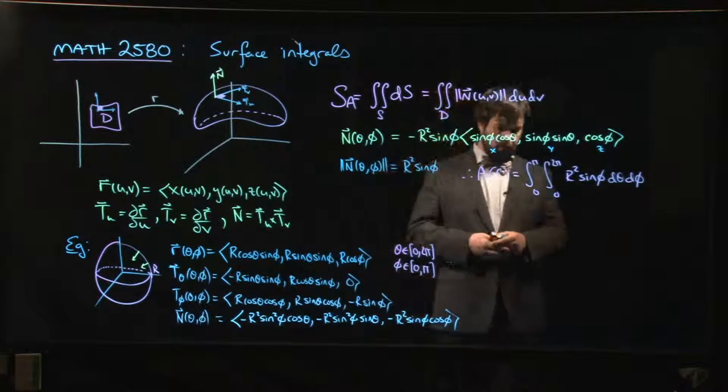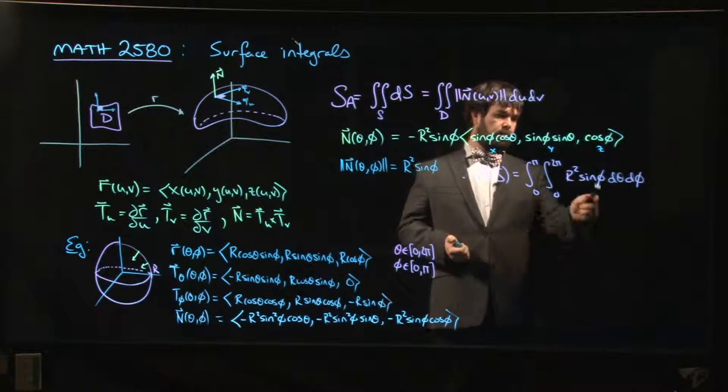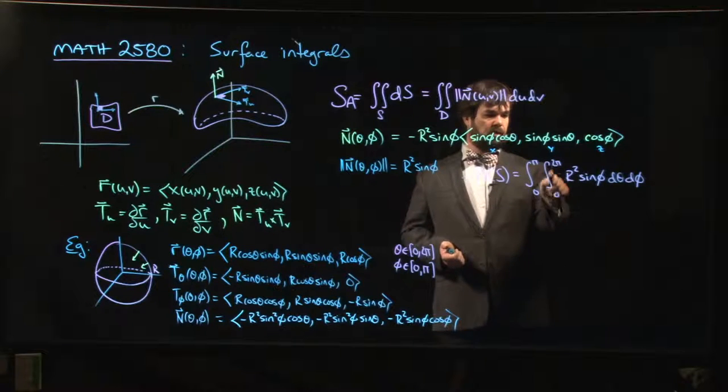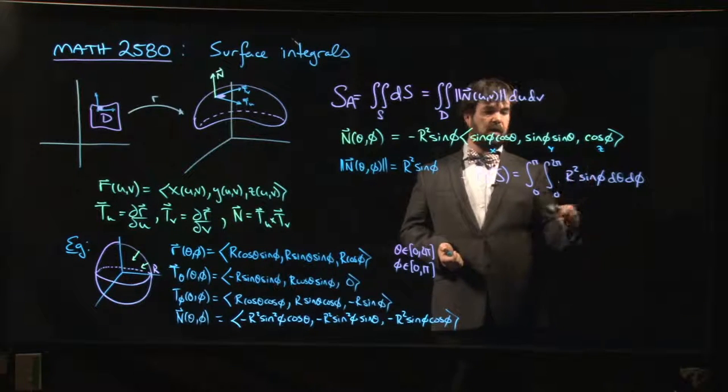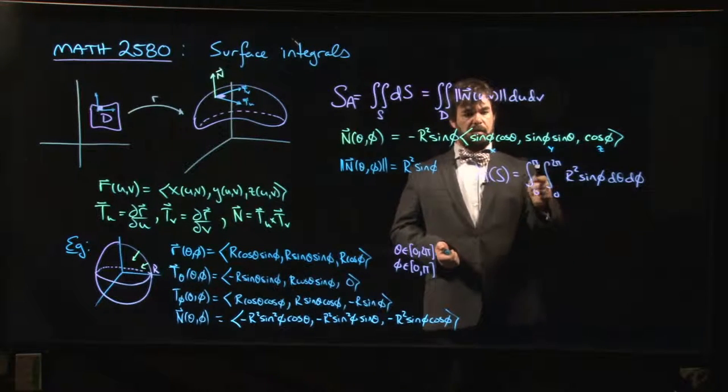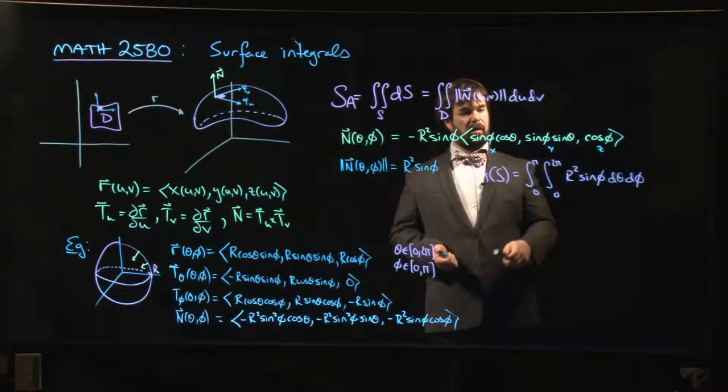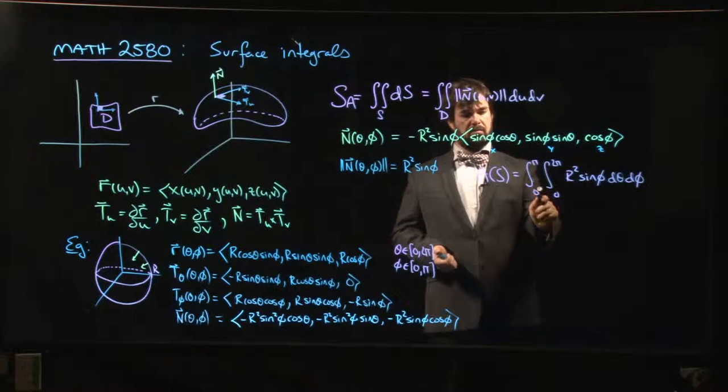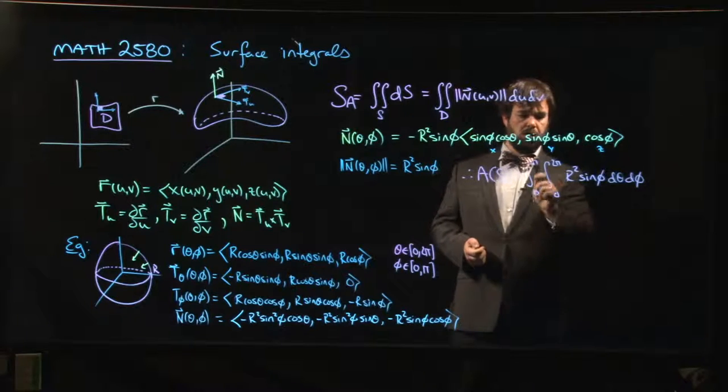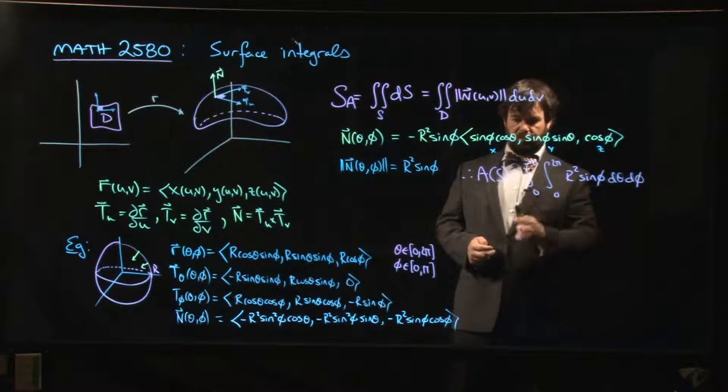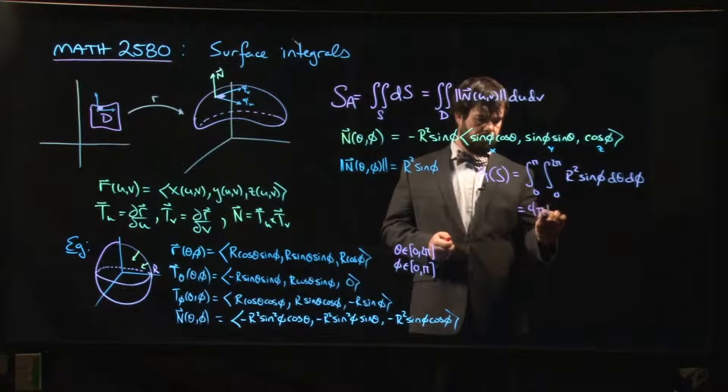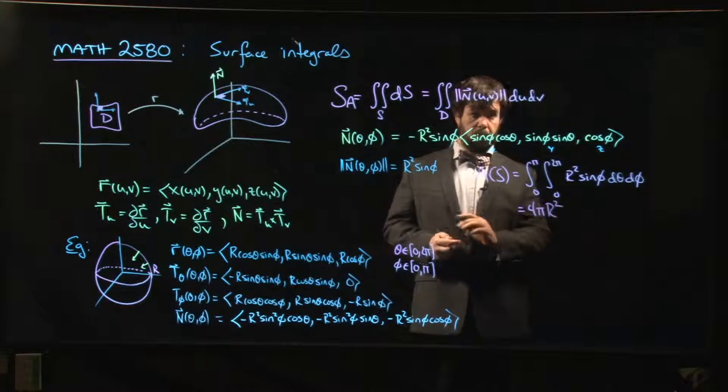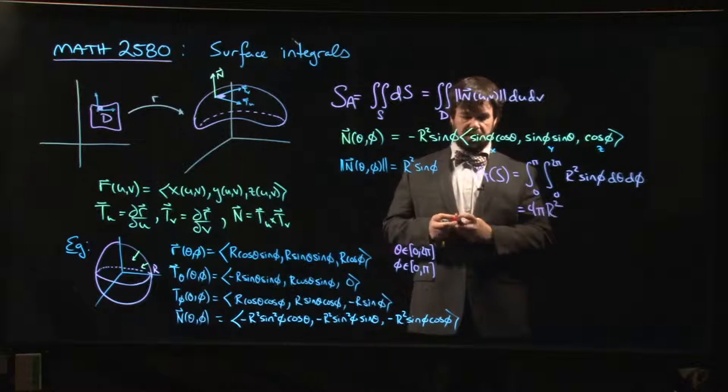And of course, if you compute this integral, there's no dependence on theta, so we get 2 pi from the theta part. For the phi part, when we integrate sine phi, we're going to get negative cos phi. We plug in the endpoints. We're going to get minus minus 1, minus minus 1, we're going to get 2. So we get 2 times 2 pi times R squared. We get 4 pi R squared for the surface area of a sphere.